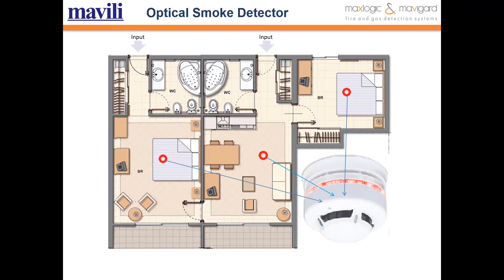Optical smoke detectors are suitable for use in hotel rooms and general areas where there is no moisture or dust. In hotel rooms, the exit areas of bathroom and toilet sections can generally be exposed to water vapor, and false alarms may occur if a detector is placed in these sections. It is therefore ideal to position smoke detectors above the bed area.